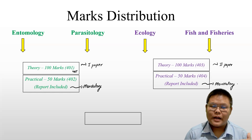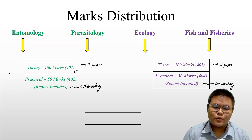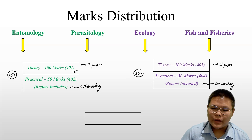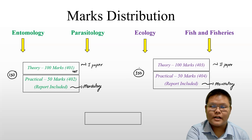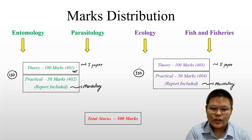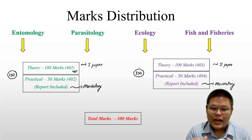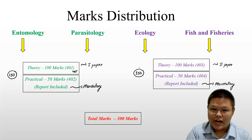So for Entomology and Parasitology, the total marks combining theory and practical is 150. In the same way, for Ecology and Fish and Fisheries, the total theory plus practical is also 150 marks. Overall, the major subject totals 300 marks.